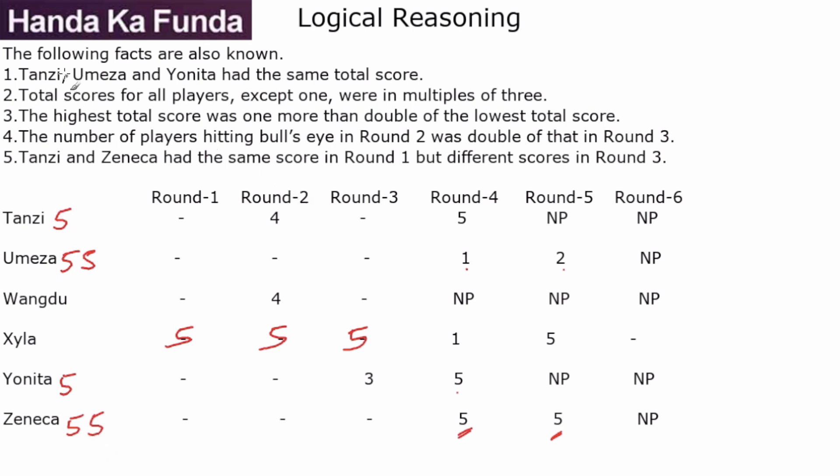Let's have a look at the other conditions. T, U, and Y had the same score. So what about the score of T do we know? So one of them is 5, then there is 4, and then there is 5. So that is a total of 14 plus one round is missing. Umeza, on the other hand, is 5 and 5, that's 10, and 1 and 3. So Umeza is equal to 13 plus something which is missing in one round. And they are equal to Yonita. So Yonita is 5 here and 5 here. So that is 10 plus 3, 13, and then 1 is missing.